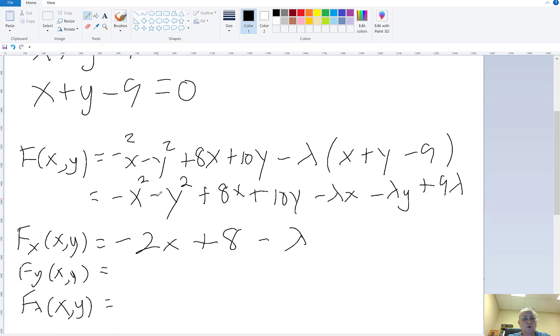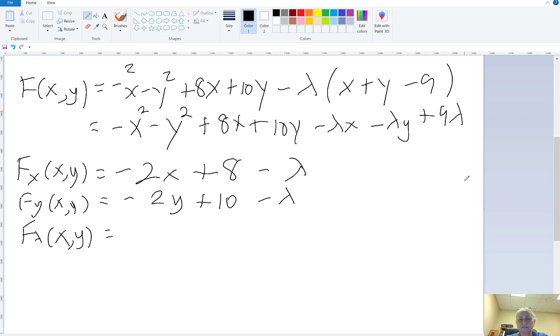In terms of y, negative 2y. 8x would be a constant, so that's a 0, plus 10, because that's the coefficient of y, minus lambda x would be a constant, minus lambda. And then 9 lambda would be a constant, so that's a 0.